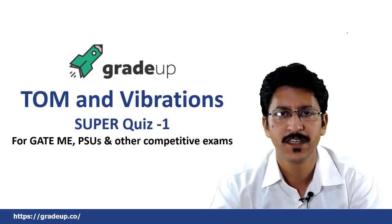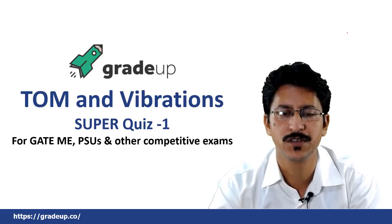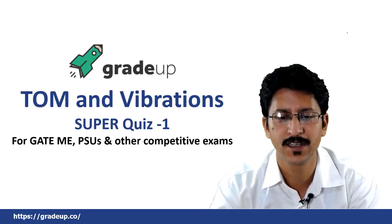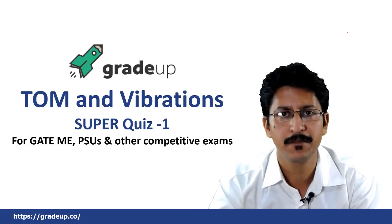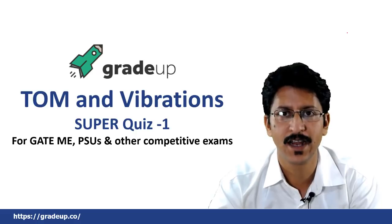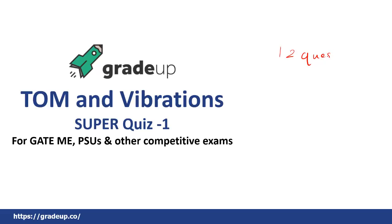Continuing on that sequence, we will be starting with the super quizzes of the next subject — Theory of Machines and Vibrations. You all know the concept of super quizzes from thermodynamics: we divide the whole subject into 2 to 3 parts based on topics, and then conduct the super quiz. The super quiz carries 12 questions and is of 20 marks. We also take a live session in which we discuss those questions and take up your queries and doubts regarding the topics covered in that particular super quiz.